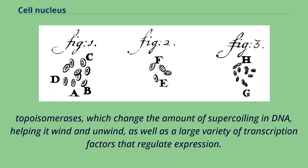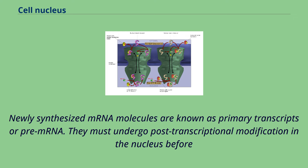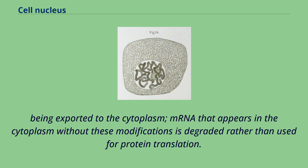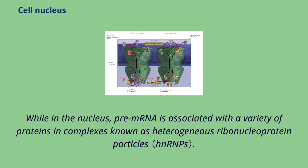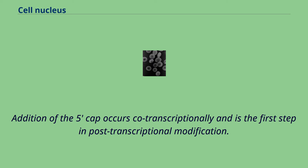Newly synthesized mRNA molecules are known as primary transcripts or pre-mRNA. They must undergo post-transcriptional modification in the nucleus before being exported to the cytoplasm. mRNA that appears in the cytoplasm without these modifications is degraded rather than used for protein translation. The three main modifications are 5'-capping, 3'-polyadenylation, and RNA splicing. While in the nucleus, pre-mRNA is associated with a variety of proteins and complexes known as heterogeneous ribonucleoprotein particles. Addition of the 5'-cap occurs co-transcriptionally and is the first step in post-transcriptional modification. The 3'-polyadenylation tail is only added after transcription is complete.